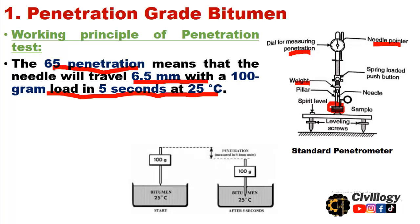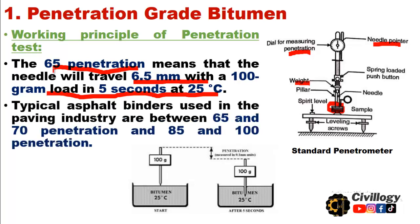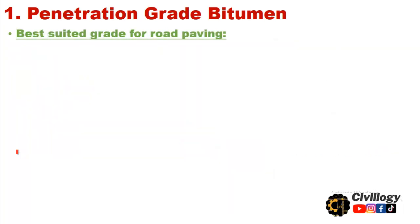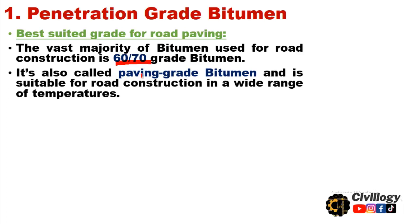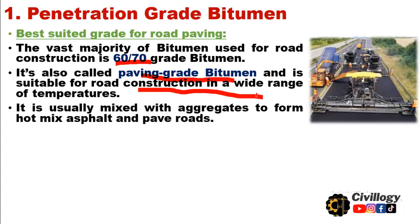As you can see in this picture, the weight of the needle is 100 grams. Typical asphalt binders used in the paving industry are between 65 and 70 penetration and 85 and 100 penetration. The vast majority of bitumen used for road construction is 60/70 grade bitumen. 60/70 means the range of penetration is between 6 mm to 7 mm. It is also called paving grade bitumen and is suitable for road construction across a wide range of temperatures. It is usually mixed with aggregates to form hard-mixed asphalt and paved roads.